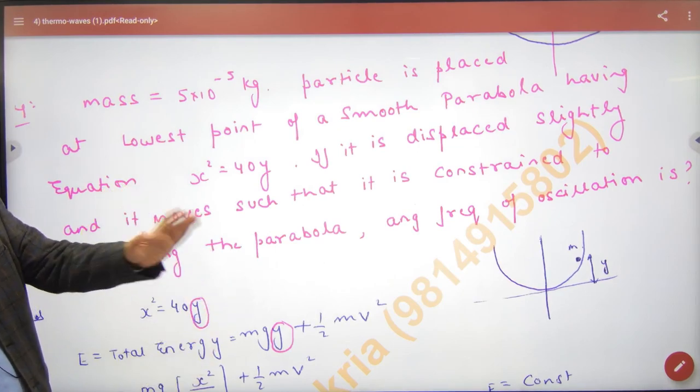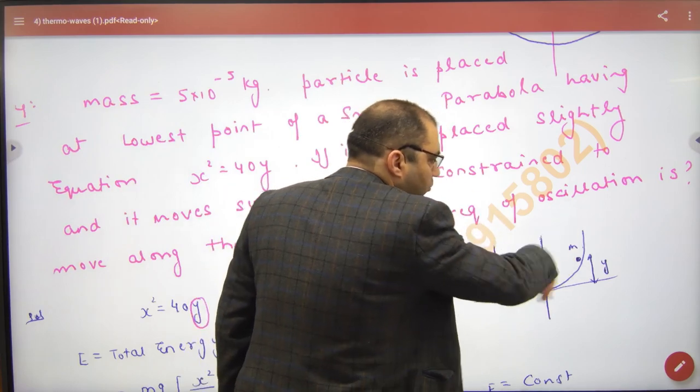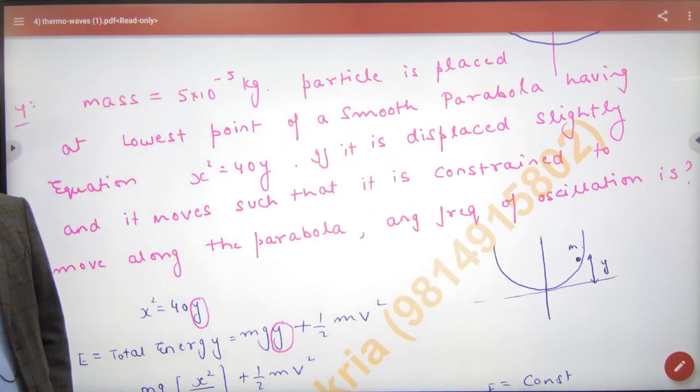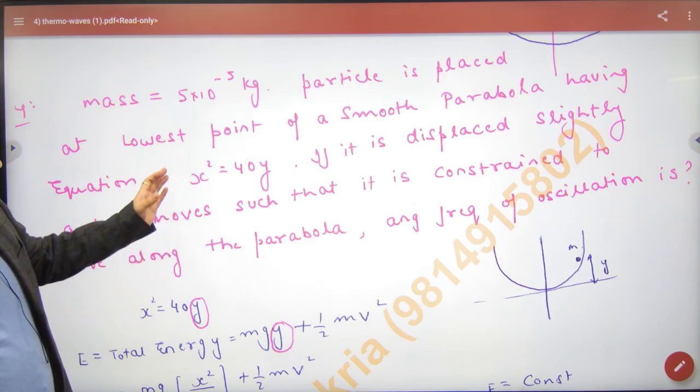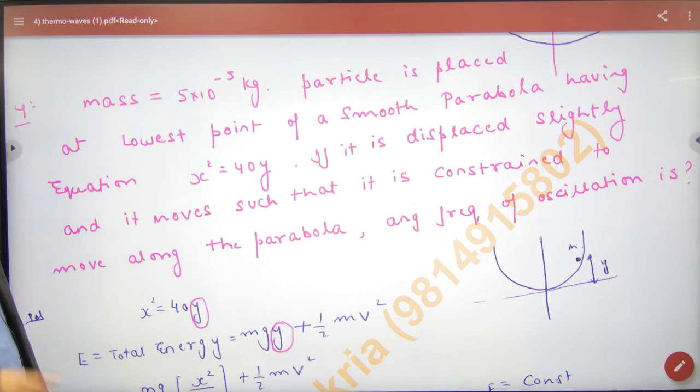This is a non-medical question. A mass is doing to-and-fro motion in a container whose shape is parabolic. The parabolic equation is x² equals 40y. This is given to us, and the mass is moving to and fro.